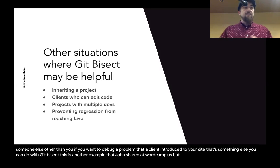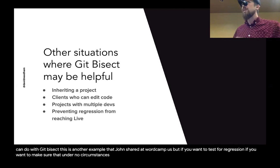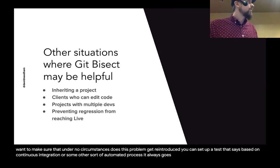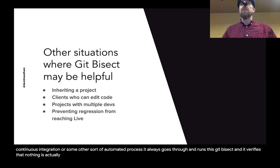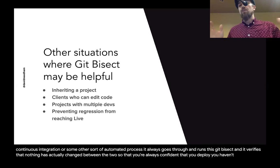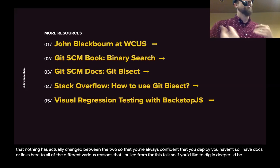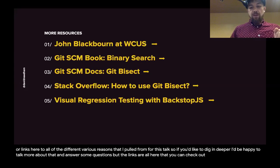Also — and this is another example John shared at WordCamp US — if you want to test for regression and make sure that under no circumstances does a problem get reintroduced, you can set up a test using continuous integration or some other automated process that always runs git bisect and verifies nothing has changed. So you're always confident that when you deploy, you haven't introduced any sort of regression or problems.